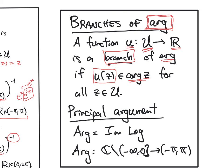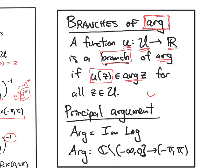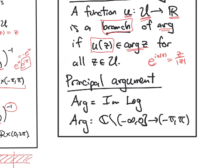So again, this would just mean that e to the i u(z) would give me the point on the unit circle corresponding to z. We can define the principal argument as we did with the log. I'll just take the imaginary part of the principal logarithm. So this will map the plane minus the non-positive real numbers onto the interval (-π, π).